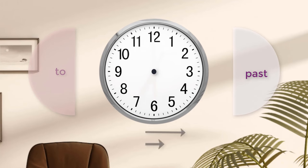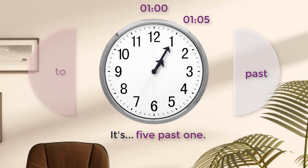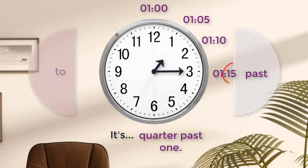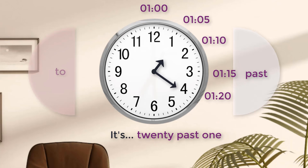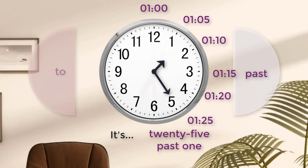Now let's have the hour hand at one. It's five past one. Ten past one. It's quarter past one. Fifteen is always quarter past. It's twenty past one. It's twenty-five past one.